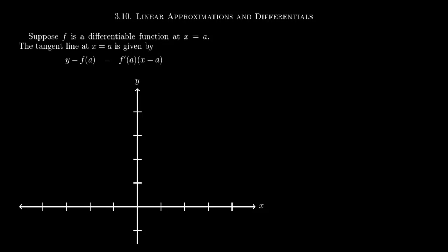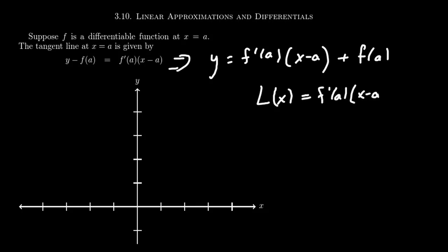Typically we solve for y here to get the slope intercept form. So we might get something like y equals f prime of a times x minus a plus f of a. Since we solve for y here, this itself becomes a function in its own right. So we could come up with a new function, say L of x, which equals this value f prime of a times x minus a plus f of a. This is going to be a linear function, and this is often referred to as the linearization of the function.